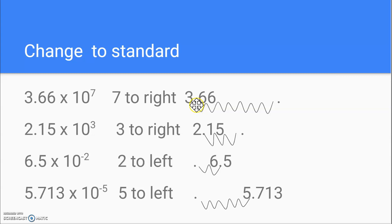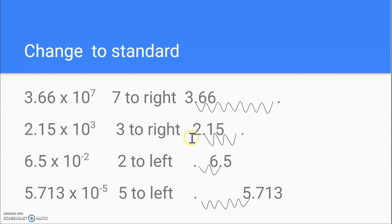So let's do that — 7 places: 1, 2, 3, 4, 5, 6, 7 — and move the decimal out here. But what happens to all this space? We have to put a zero in each one of these spots, so I put in 1, 2, 3, 4, 5 zeros. For the next number, moving it 3 places: 1, 2, 3 — so I have to add a zero here. This time going to the left — 2 places: 1, 2 — so I add one zero here. And now moving 5 to the left: 1, 2, 3, 4, 5 — meaning I have to add 1, 2, 3, 4 zeros.